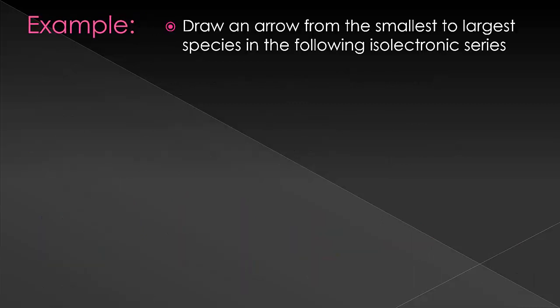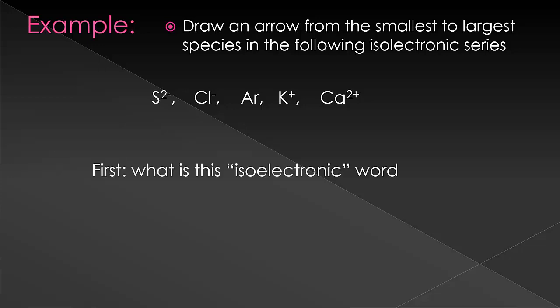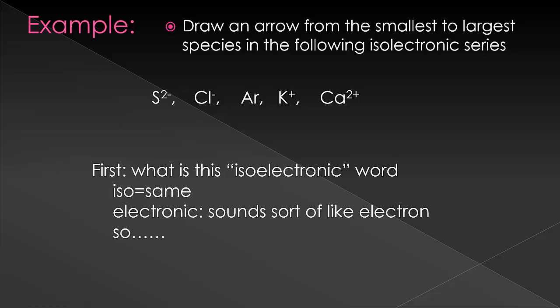Let's do a quick example. For the species below, draw an arrow from the smallest to largest species in the following isoelectronic species. So I use this as an excuse to introduce a new word. What does isoelectronic mean? Well, we can break down the word and say iso means same. Electronic sounds sort of like electron, and so isoelectronic means that they all have the same number of electrons. So what I did here is I set up a series of ions where they all have the same number of electrons as argon. And then we just have to rank by charge. So since S2 minus is the largest, calcium 2 plus will be our smallest, and our arrow goes to the left.